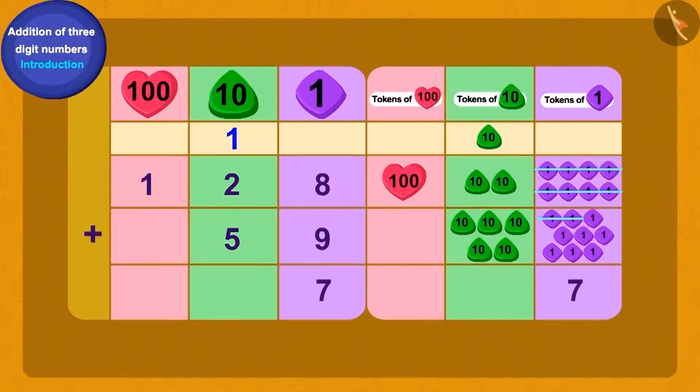We will write this one tens token along with the rest of the tens tokens. We can show this by writing a 1 over 2. This process is called carry over. How many tens tokens do we have now? 8.